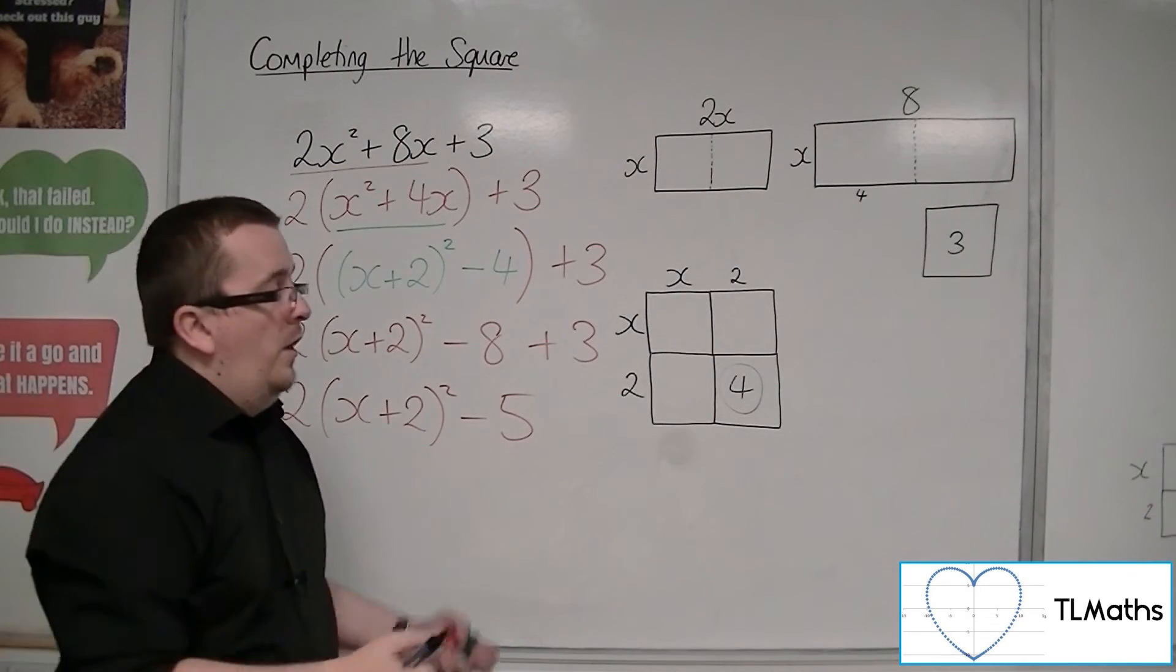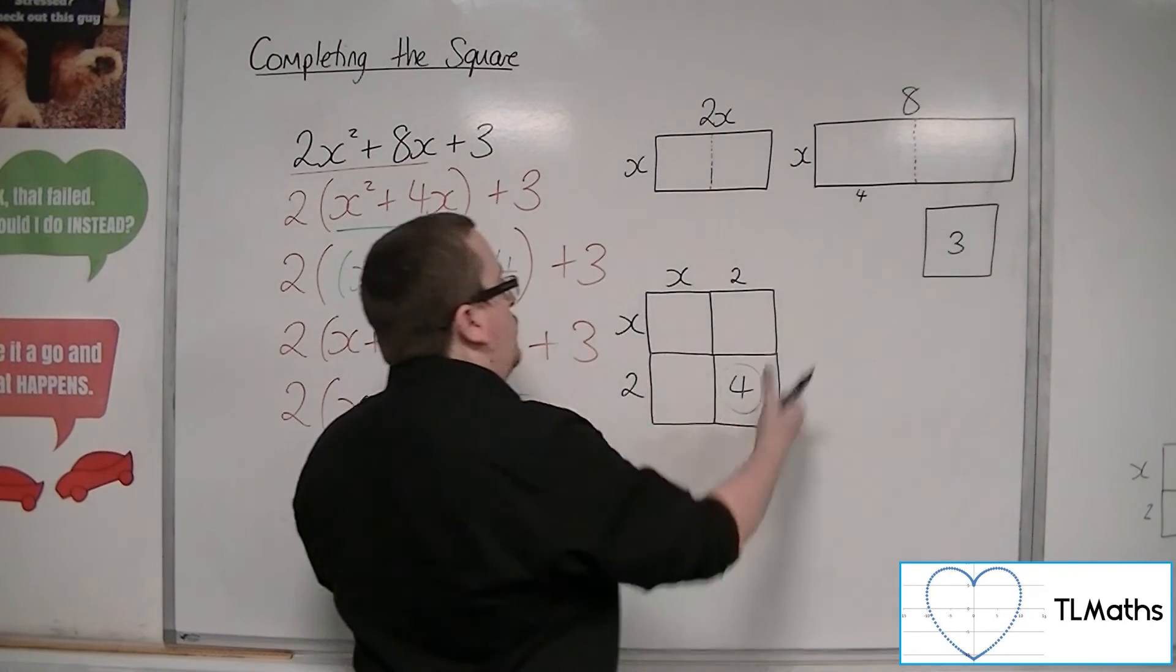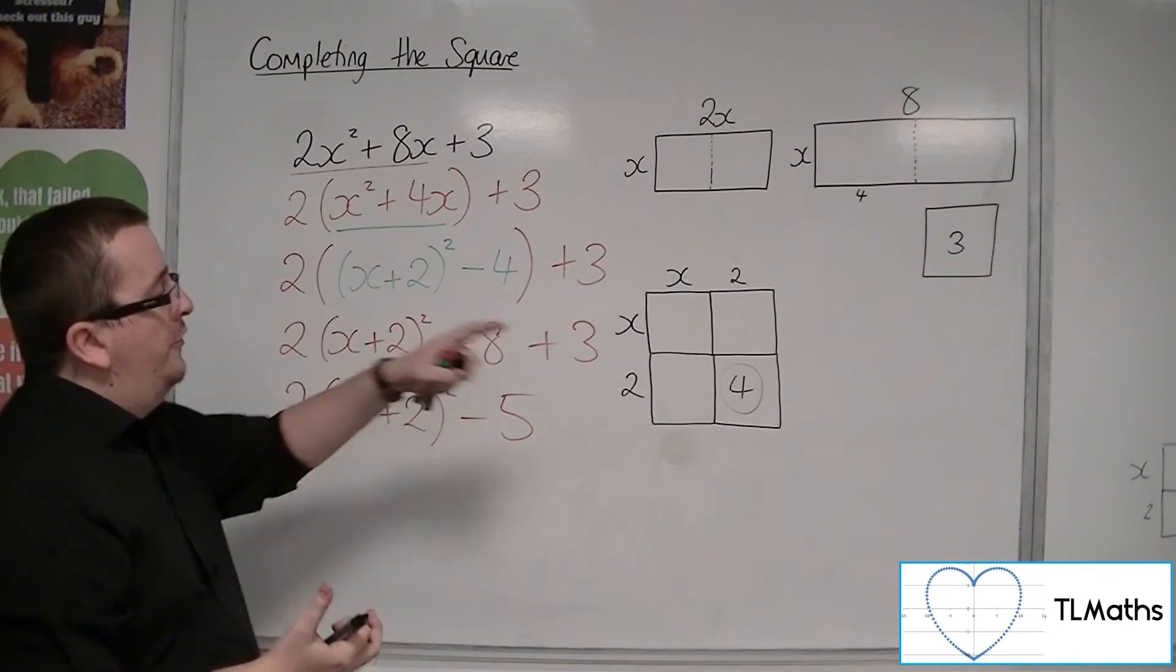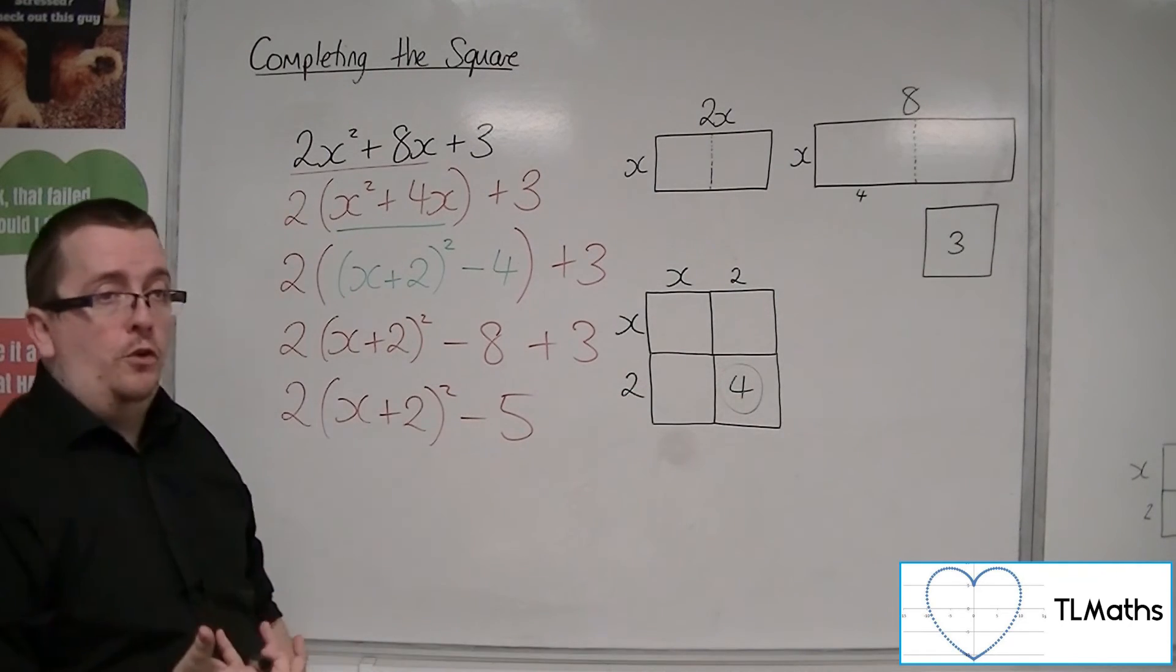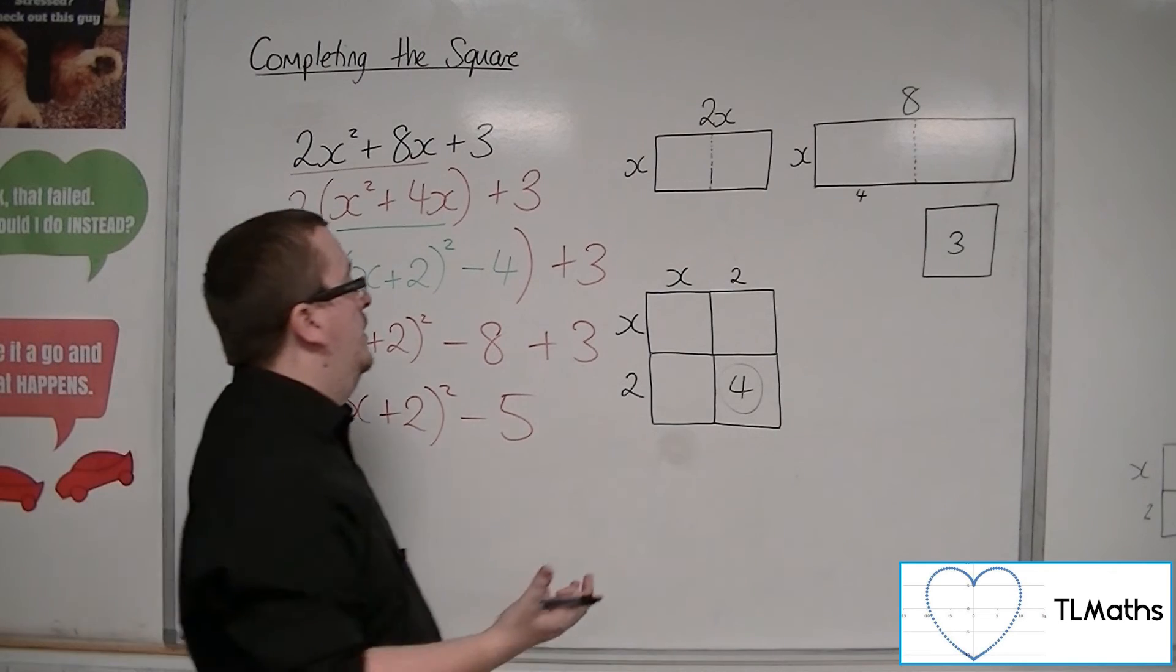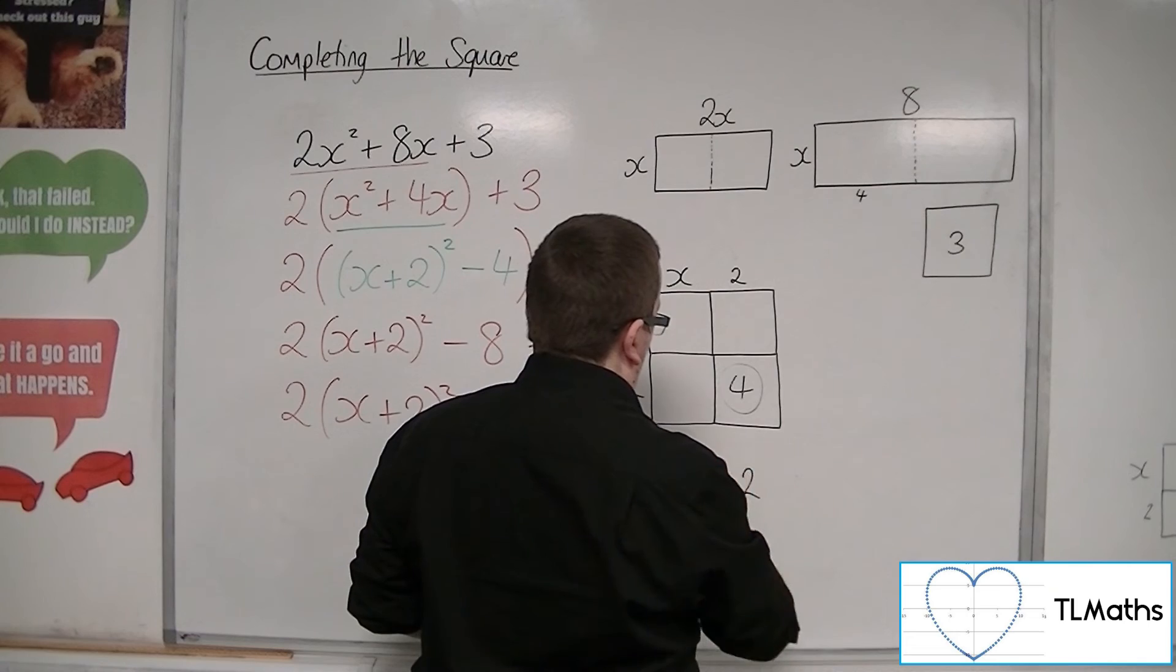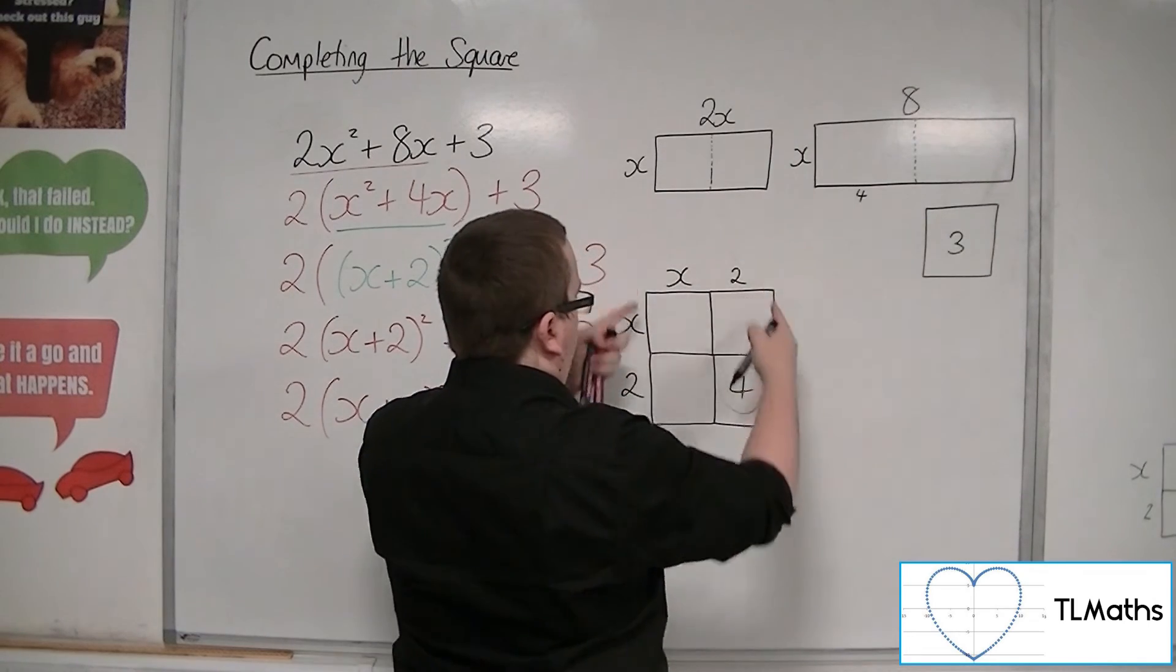Now remember, I've only taken half of the pieces, so actually I've got 2 lots of this. I've got 2 lots of this 4 that is missing, so 2 lots of the minus 4. So I've got this x plus 2 squared that I've got here.